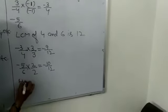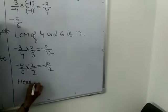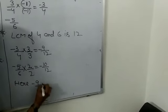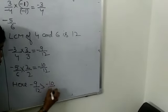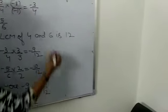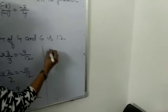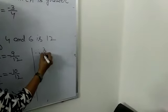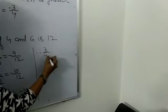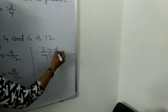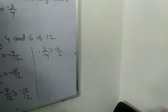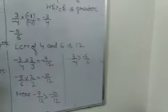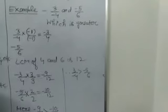Here, minus 9 upon 12 is greater than minus 10 upon 12. Therefore, we can say 3 upon minus 4 is greater than minus 5 upon 6. That's the comparison of rational numbers.